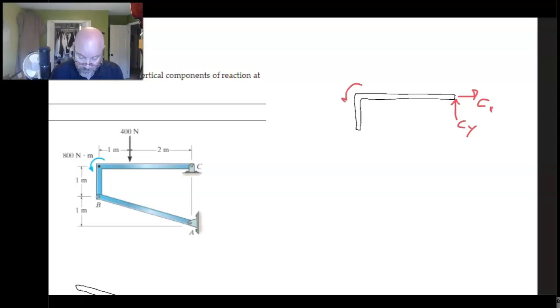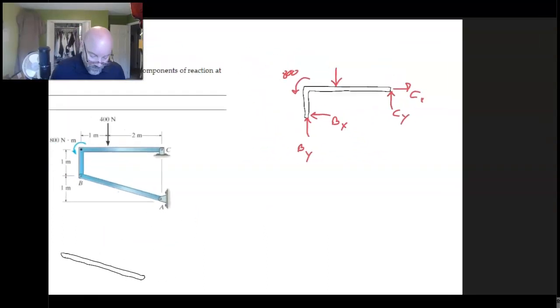Then we've got the 800 here, and then the 400 is in here just like this. Then we're going to need, I'm going to say that we must have some, again it's just kind of a guess, a BY there. CX is to the right, so that means BX is going to have to be to the left, like so. Let's just sort of dig in here and kind of see what happens.